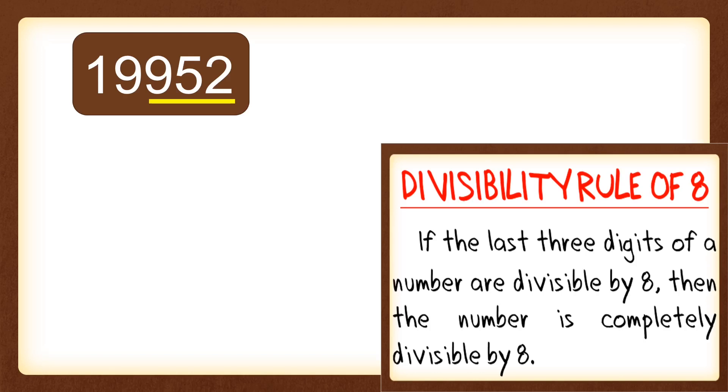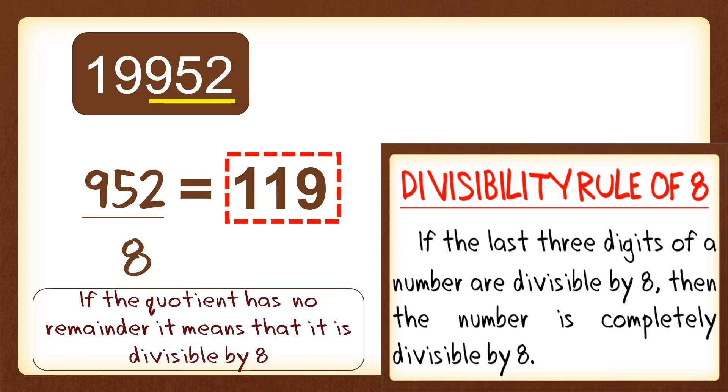And we're going to divide it by 8. Just use your calculator or any device. And we'll get 119 as a quotient. And if the quotient has no remainder, it means that it is divisible by 8. So 19,952 is divisible by 8.